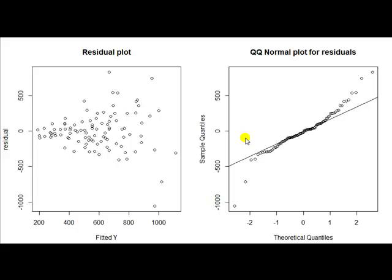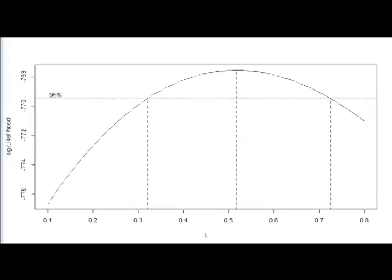The right figure is a normal QQ plot of the residuals. The dots fall away from the line at the end, suggesting the error is not normal. So we try a BC on y.